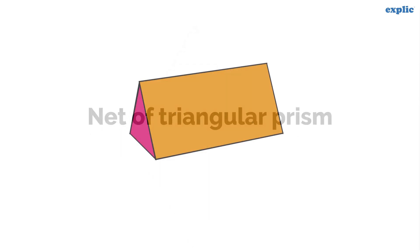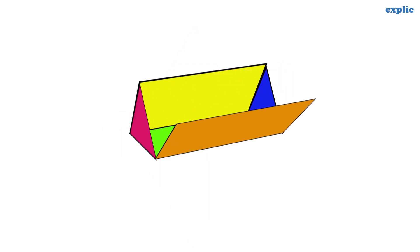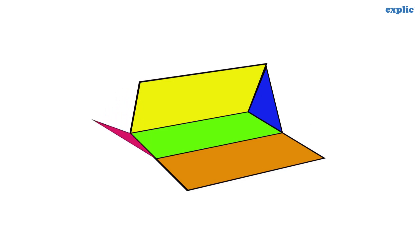A triangular prism is a three-dimensional shape that is made by combining three rectangles and two triangles.